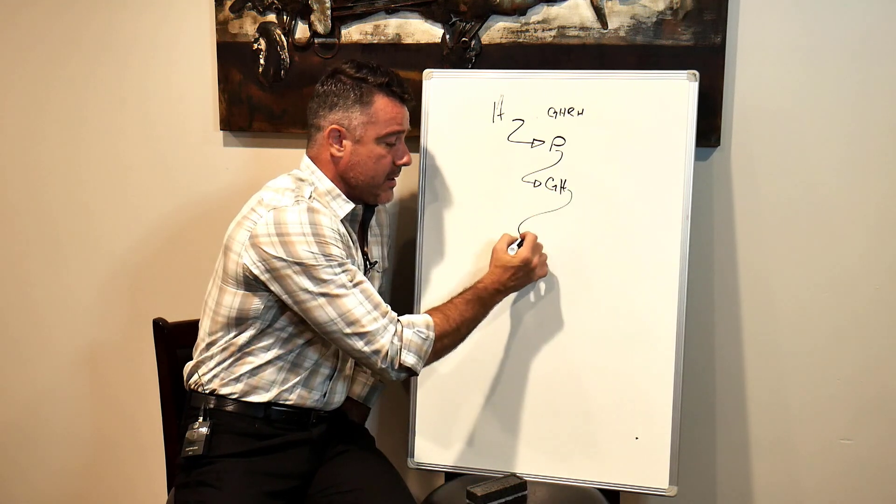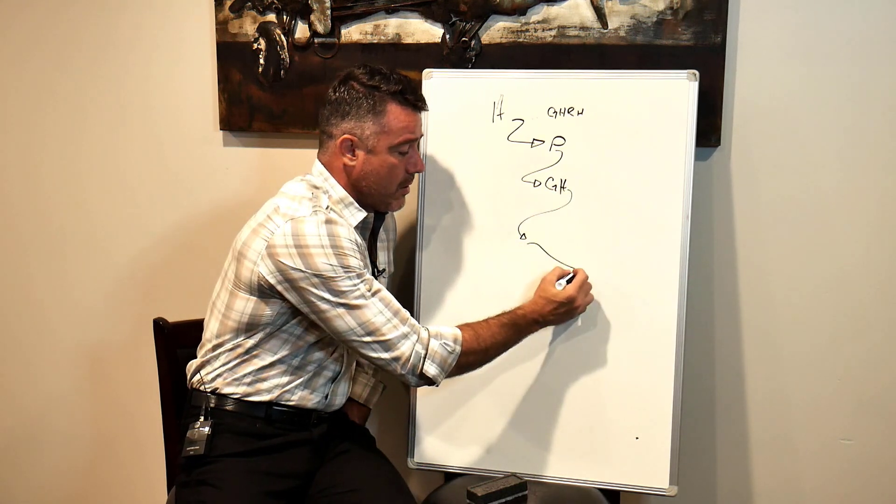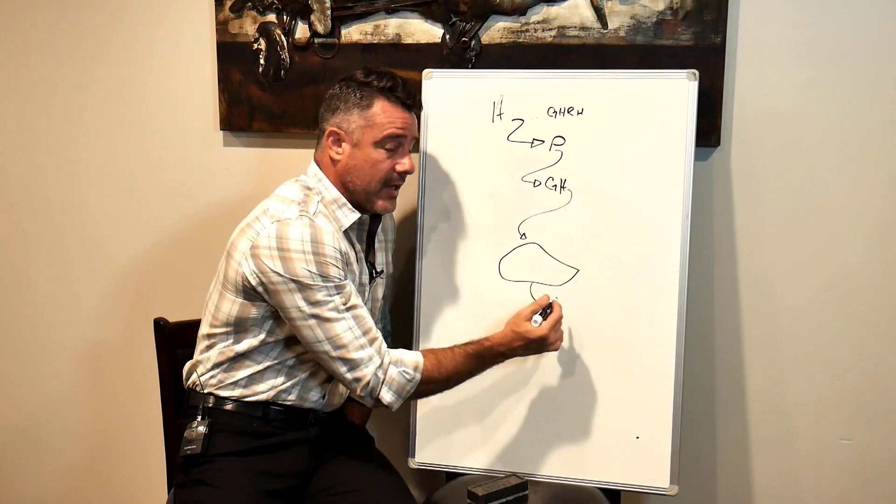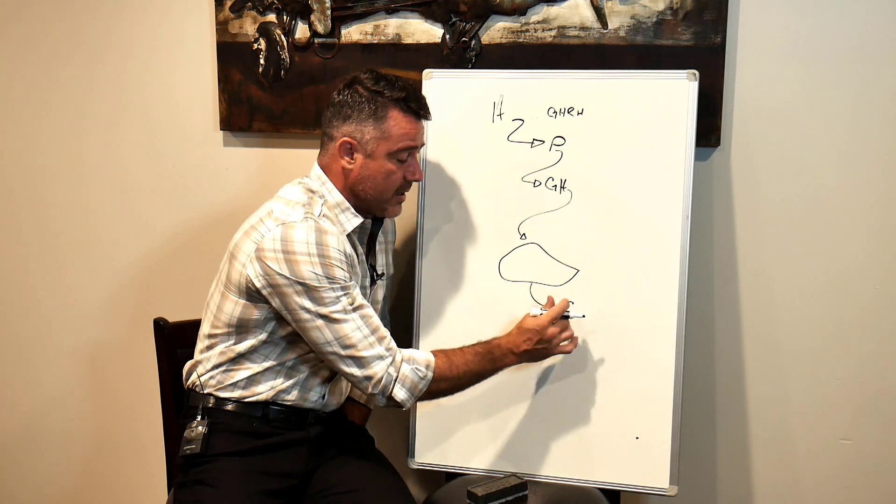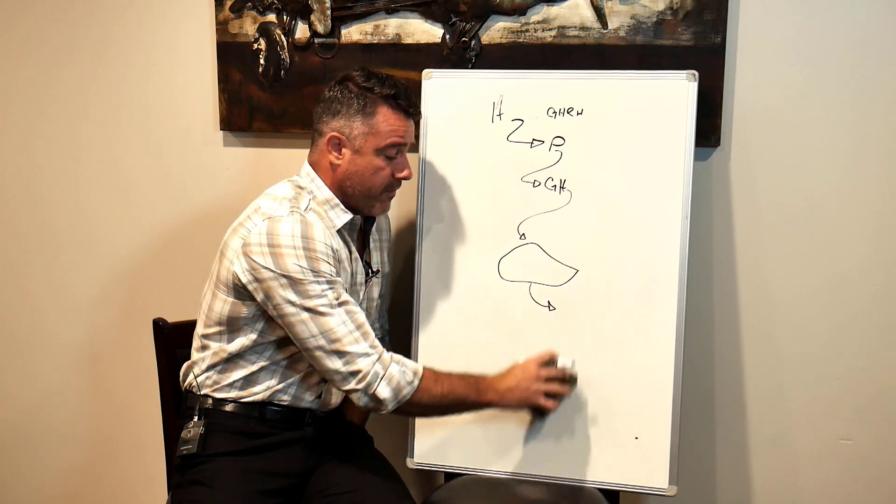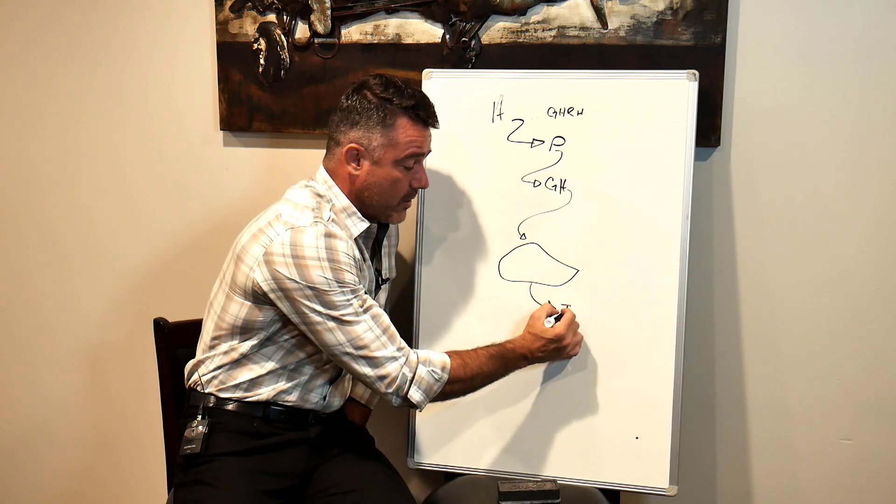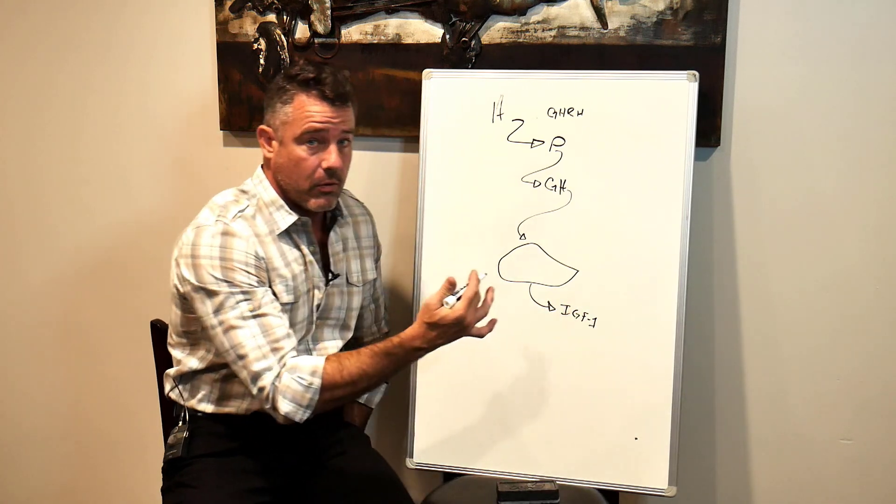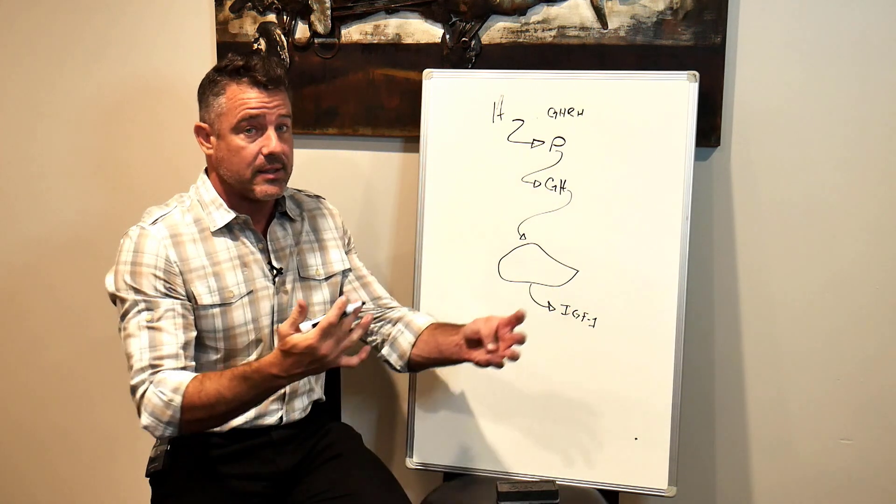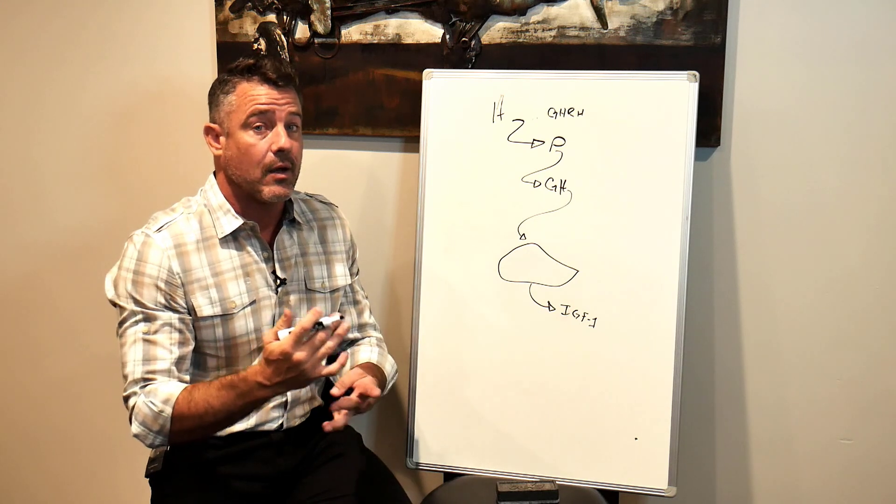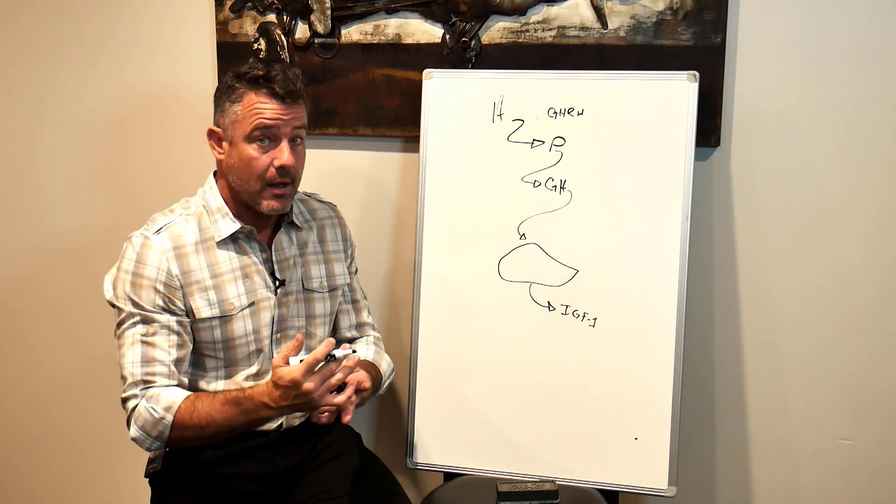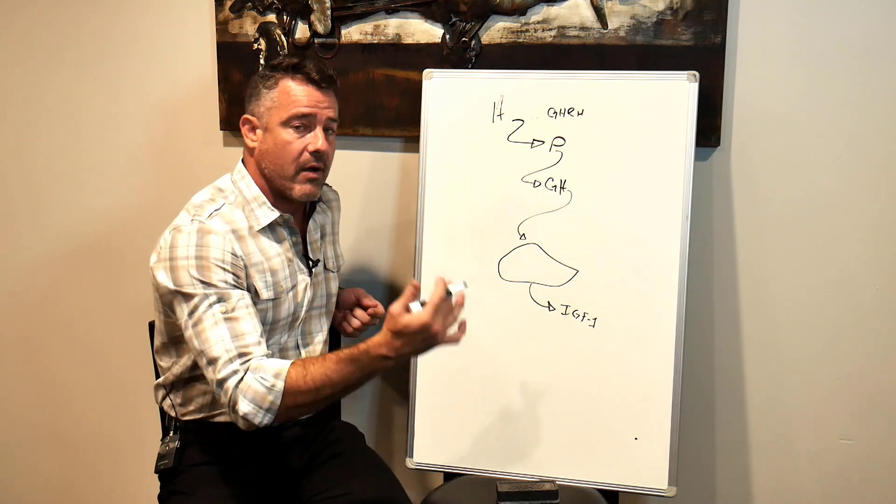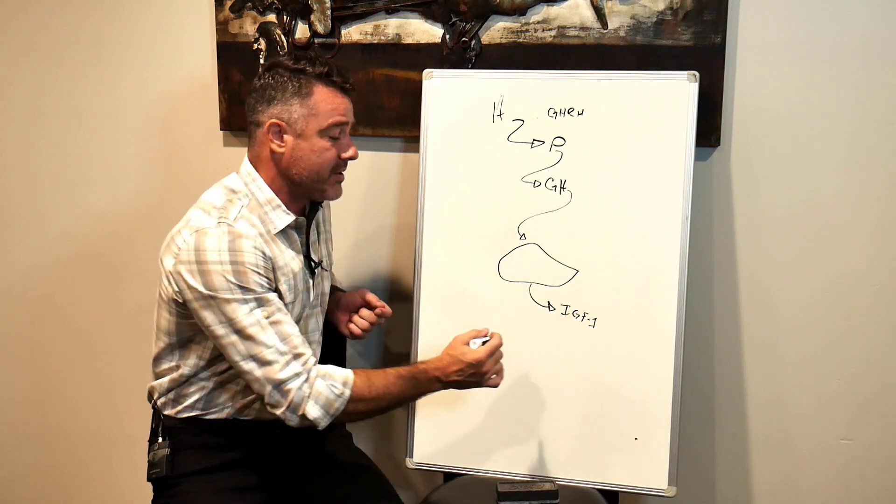What it does for protein uptake in muscle or amino acid uptake and protein production in muscle is tremendous. It increases glycogen uptake in the muscles, and there's so many benefits to this. Another thing that happens is it goes to the liver, and the liver produces something called IGF-1, which we've been talking about, and it's insulin-like growth factor type one.